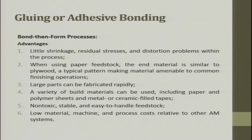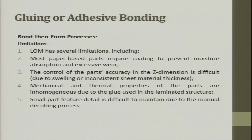The advantage is little shrinkage, residual stress, and distortion problems within the process. When using a paper feedstock, the end material is similar to plywood — a typical pattern-making material amenable to common finishing operations. Large parts can be fabricated very rapidly. A variety of building materials can be used including paper, poly sheet, metal, or ceramic tape. The feedstocks are non-toxic, stable, and easy to handle. Low material, machine, and process cost relative to other AM systems.